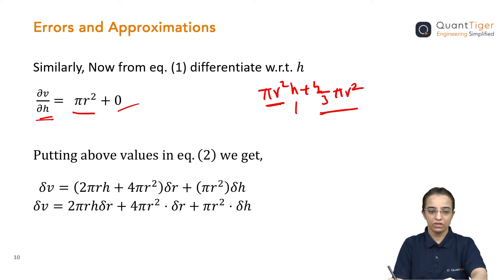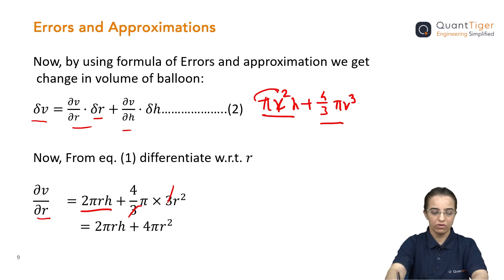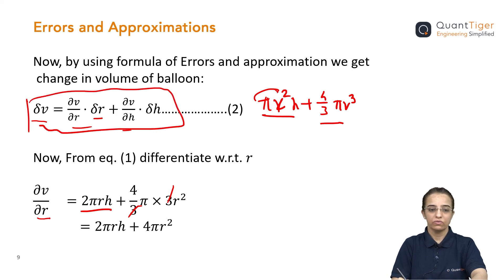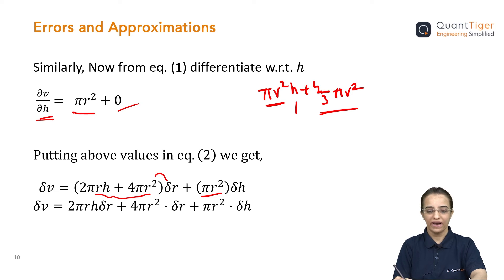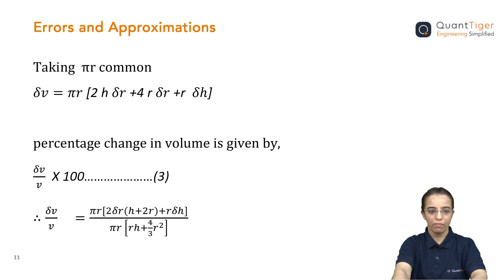Now we have both values: del V / del r and del V / del h. We substitute these into the formula from Equation 2: delta V = (del V / del r) * delta r + (del V / del h) * delta h. Placing the derived expressions into the brackets and expanding, we multiply delta r with the first bracket and delta h with the second. Simplifying, pi r is common throughout both terms, so we factor it out.